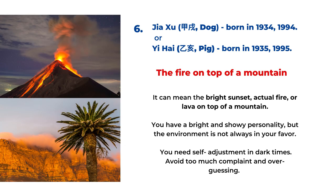The sixth type is for the Jia Wu year and Yi Hai year, for birth years 1934, 1935, 1994, and 1995. It's called the fire on top of the mountain. The fire on top of a mountain can mean the bright sunset on top of the mountain, actual fire, or lava. You have a very bright and showy personality, but the environment is not always in your favor. So in dark times, you need to self-adjust and avoid too much complaint or second-guessing yourself.